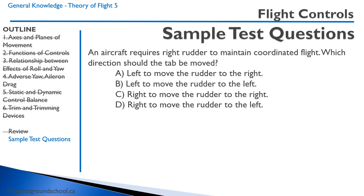Practice question: An aircraft requires right rudder to maintain coordinated flight — which direction should the tab be moved? Remember, we're pushing the right rudder, meaning the rudder goes to the right. So if we want to force that rudder to the right, we want to move the trim tab on the rudder to the left. Moving the trim tab to the left to move the rudder to the right is the correct answer.